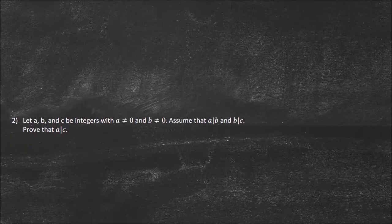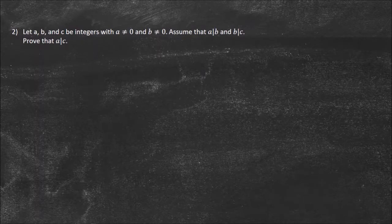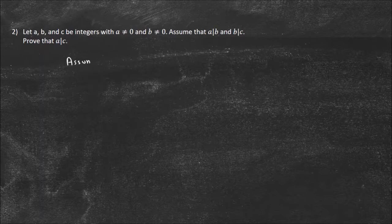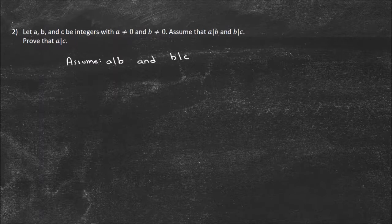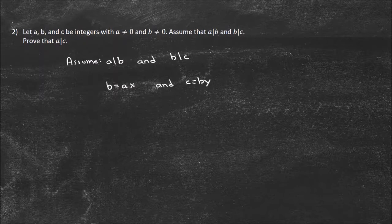On to the next one. Let a, b, and c be integers with a not equal to 0 and b not equal to 0. Assume that a divides b and b divides c — we want to prove that a divides c. Since we're doing a direct proof, we assume what we're given: a divides b and b divides c. Writing this out mathematically: b equals ax and c equals by, where x and y are elements of the integers, by the definition of divisibility.